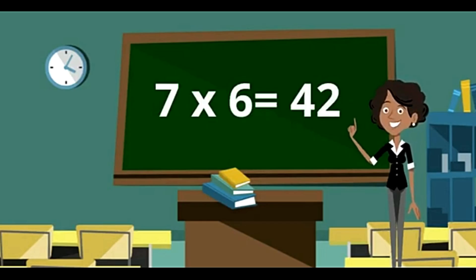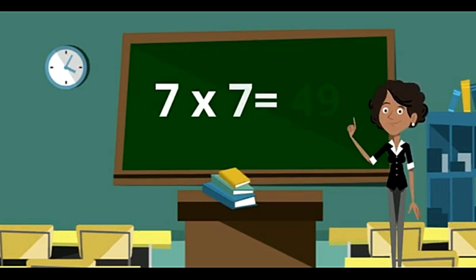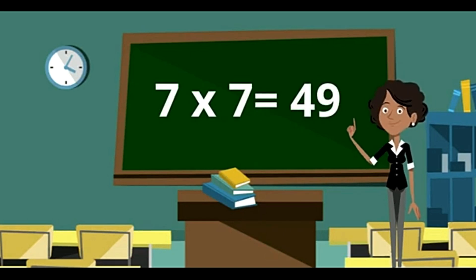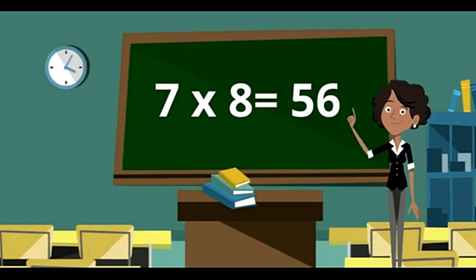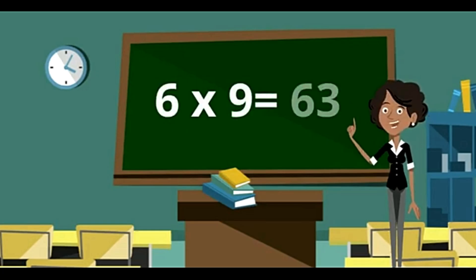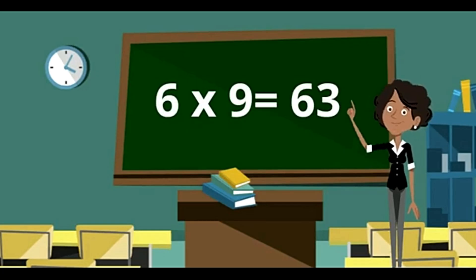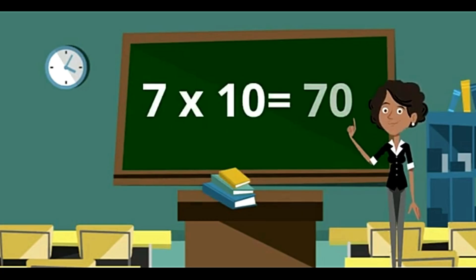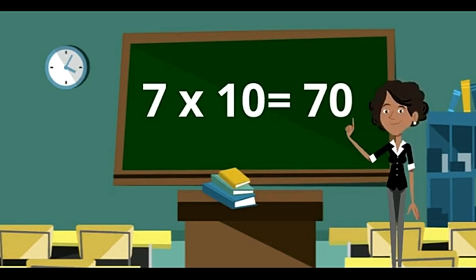7 sixes are 42. 7 sevens are 49. 7 eights are 56. 7 nines are 63. 7 tens are 70.